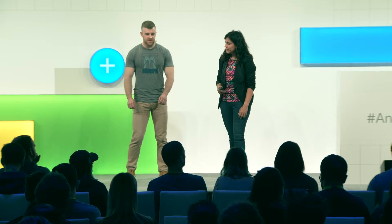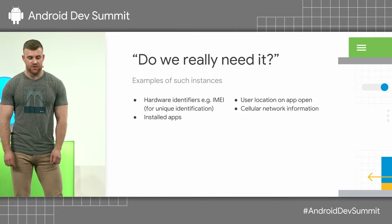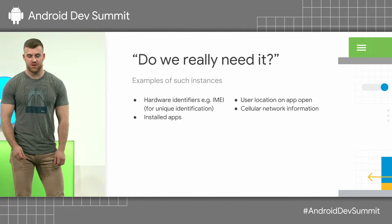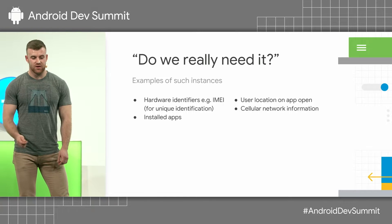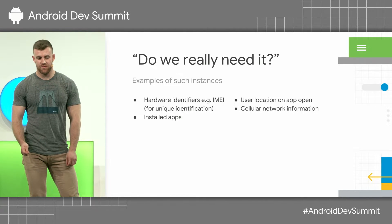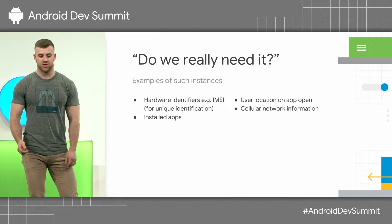Some examples of data that we've seen being collected include IMEI, used as a unique identifier for tracking users; the list of installed apps, either to fingerprint a user or to target ads to them; collecting the location of an app open; or cellular network information, such as the name of a network or the signal strength.